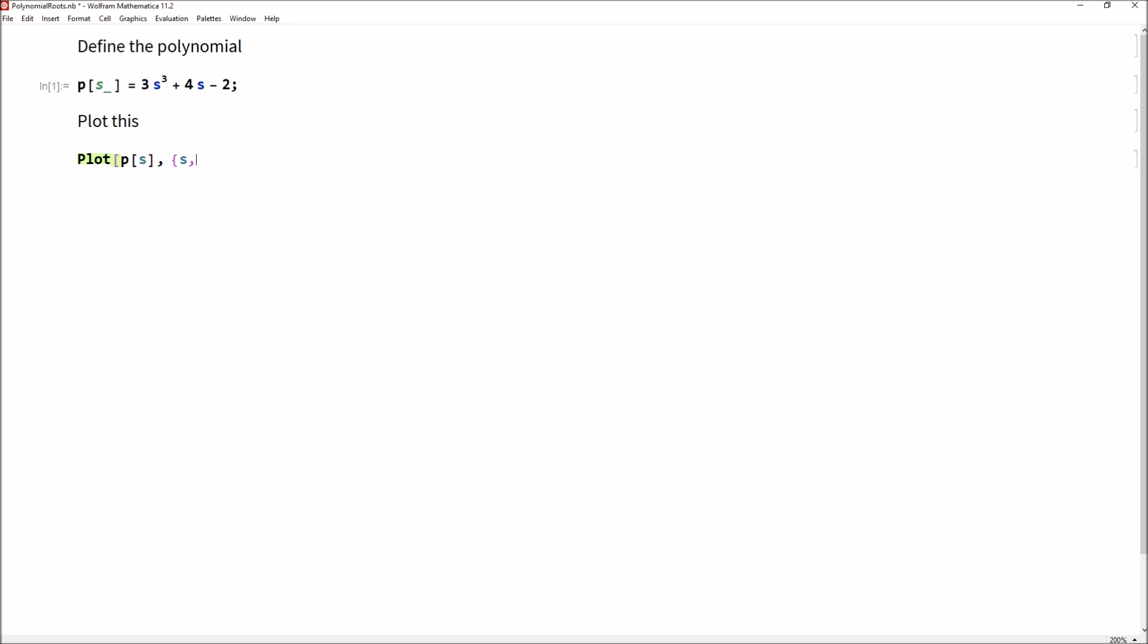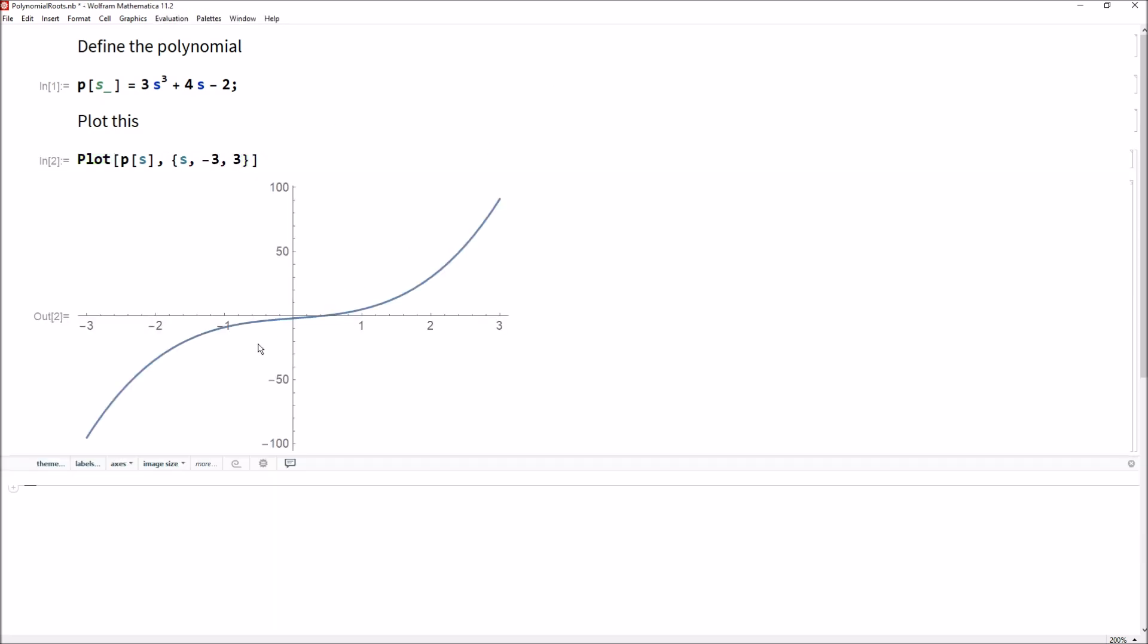Let's go ahead and say plot P(s) from a range of s running from I don't know, how about -3 to positive 3. There we go, and you can see yes indeed it looks like there's one real root and I don't see a cross zero anywhere else, so there must be imaginary roots.